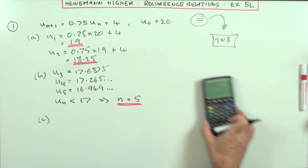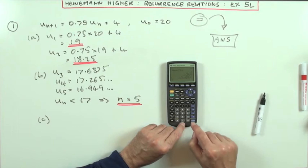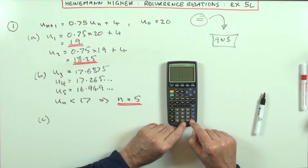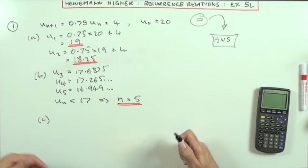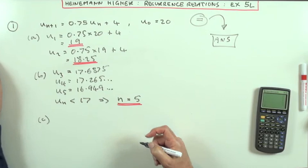In part C, find the limit of this sequence as n tends to infinity. If you don't mind pressing this button, since I've got that recurrence relation already set in here, if I just keep pressing equals, then I can see what's happening. I've got 16 and then 16 with zeros and more zeros appear in the decimal places until eventually it just ends up as nothing left. I'm just getting 16s. So that looks like the limit is 16.